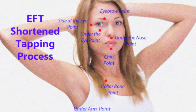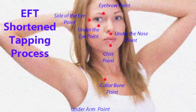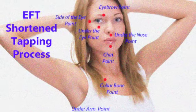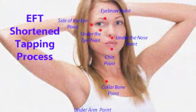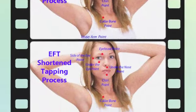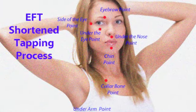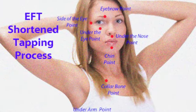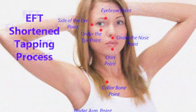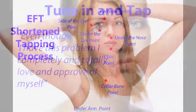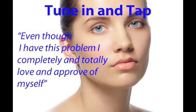I'm going to take you through the EFT shortened protocol, which uses only eight of the EFT tapping points. These points are mainly located on the face, the upper body area, and the side of the hand. In this demonstration I'm going to use 'squeezing pain in the head' as the problem.